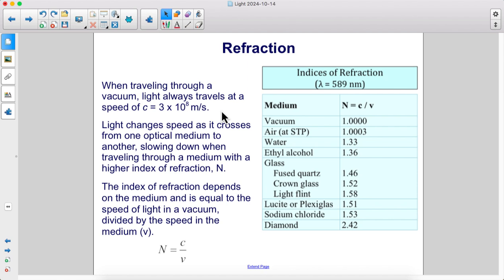The index of refraction depends on the medium and is equal to the speed of light in a vacuum divided by the speed in the medium.